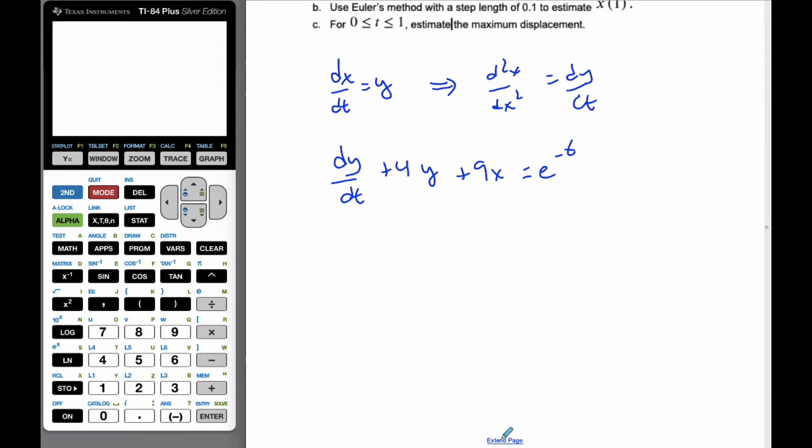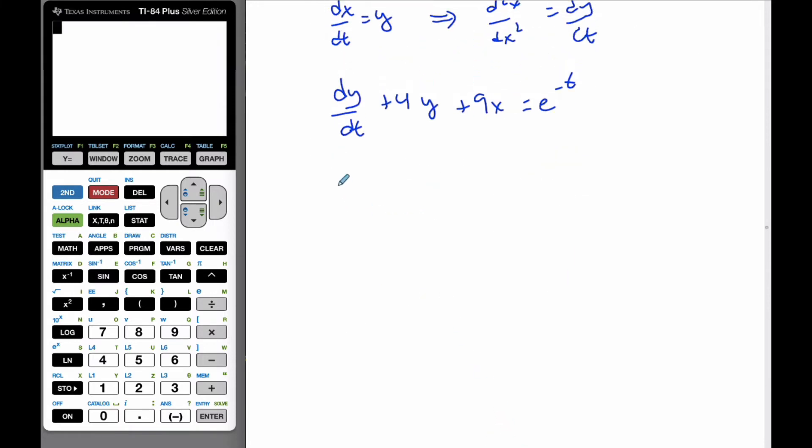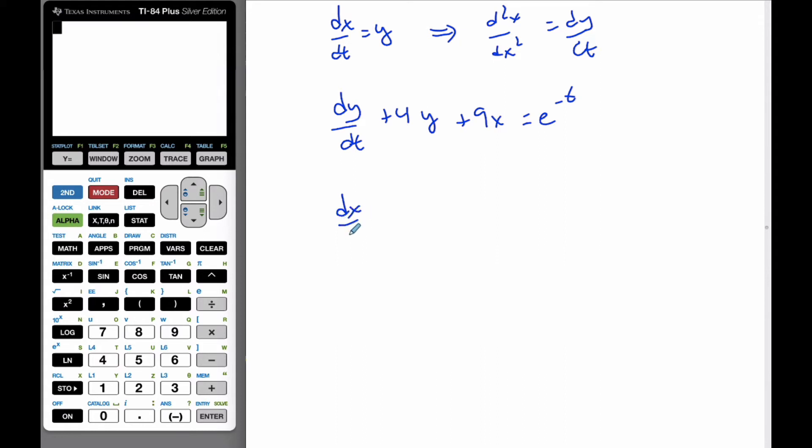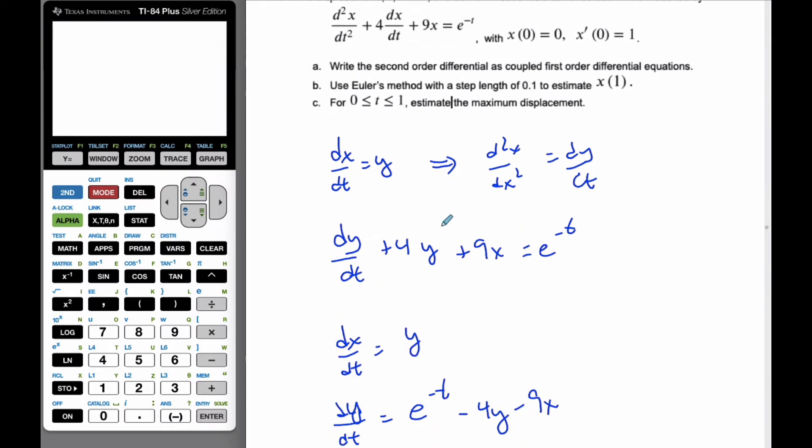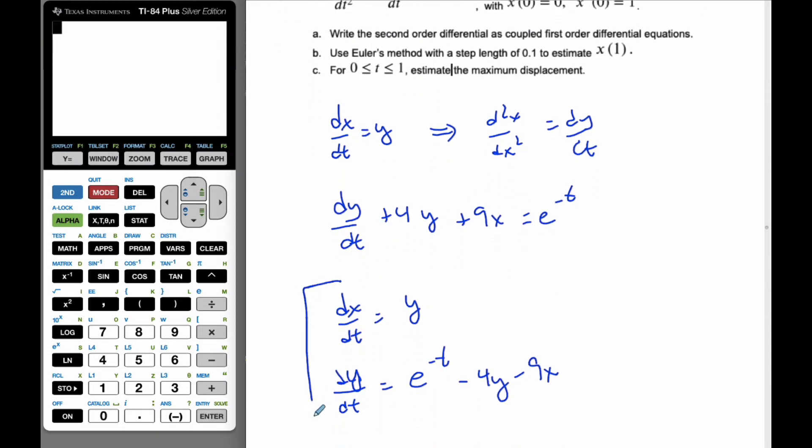And so if I rearrange this scenario, I know that my equations are going to be dx/dt is y, and dy/dt is going to be, bring this over, I'm going to get e to the negative t minus 4y minus 9x. And so here are coupled first-order equations.